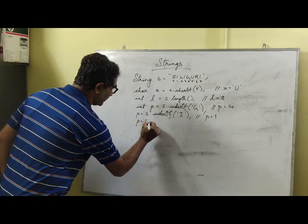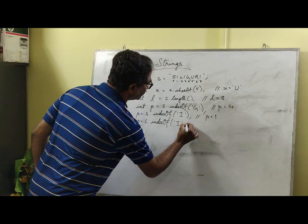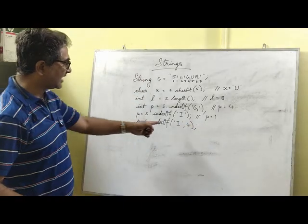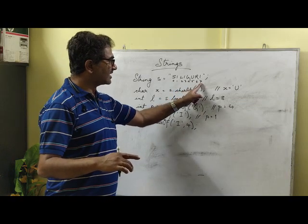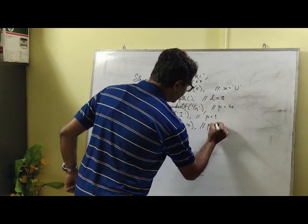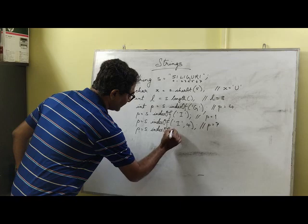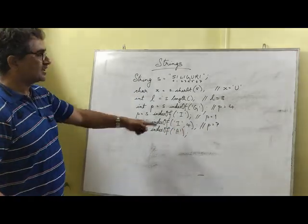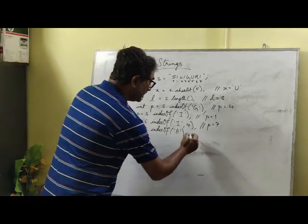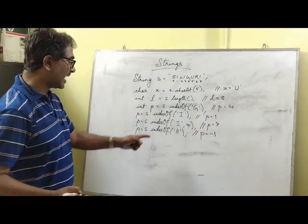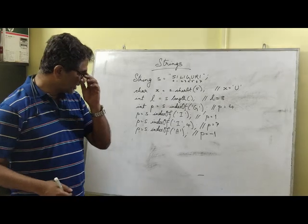indexOf also has a variant with an offset: s.indexOf('i', 4) searches for the character 'i' starting from index 4 onwards to the right, inclusive of index 4. It searches positions 4, 5, 6, 7 and finds 'i' at index 7, so p will be 7. If the character is not present in the string, indexOf returns -1, indicating the character is absent.